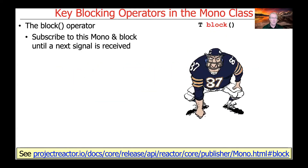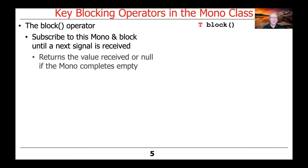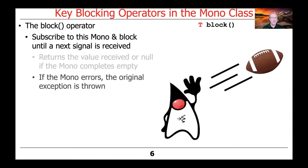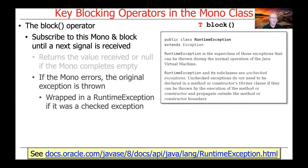The block operator will be our first focus. This operator subscribes to a mono and then blocks or waits until the next signal is received. It returns the value received, or it'll return null if the mono completes empty. If the mono errors, then the original exception is going to be thrown. If the exception thrown is a checked exception, then it will be wrapped up into a Java runtime exception.